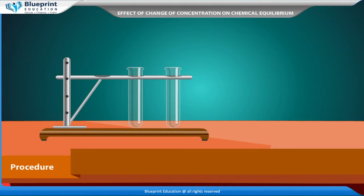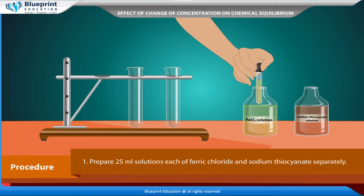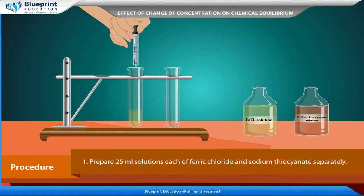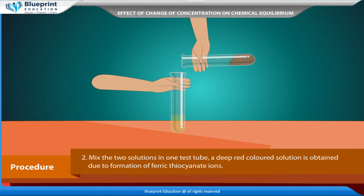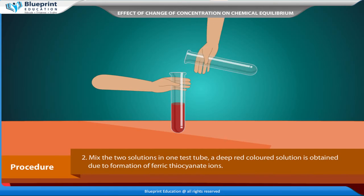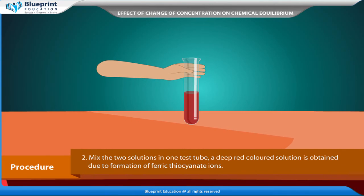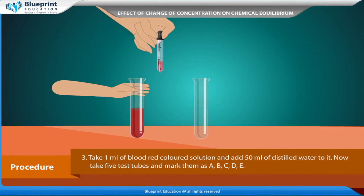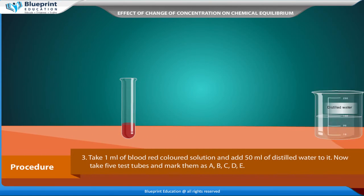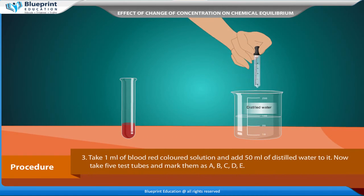Procedure: Prepare 25 ml solutions each of ferric chloride and sodium thiocyanate separately. Mix the two solutions in one test tube. A deep red colored solution is obtained due to the formation of ferric thiocyanate ions. Take 1 ml of the blood red colored solution and add 50 ml of distilled water to it.